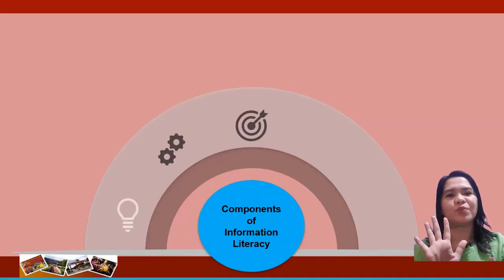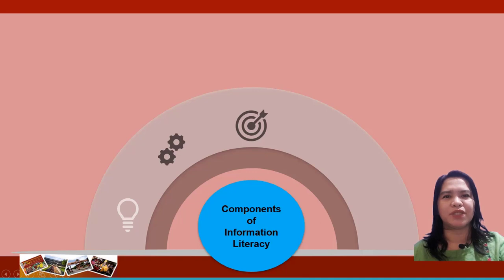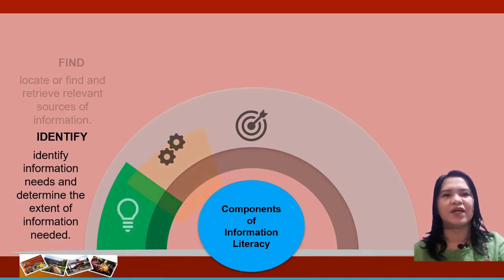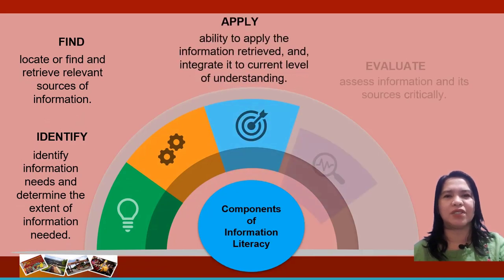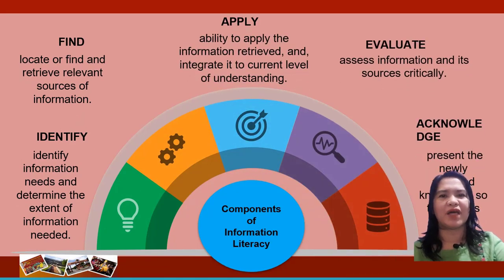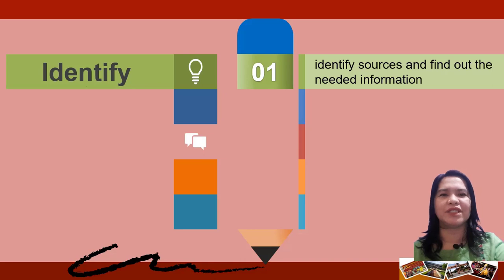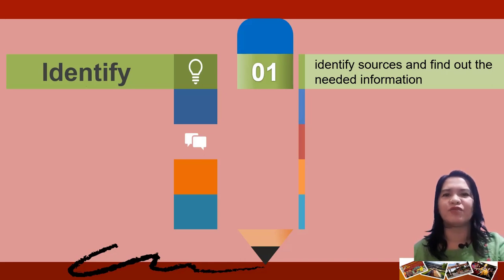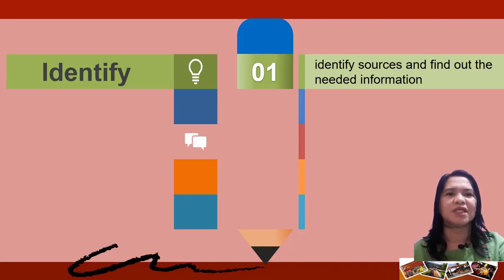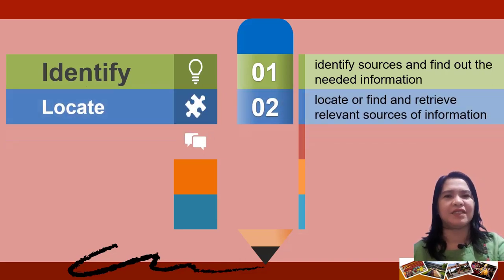Allow me to share the five components of information literacy, wherein an information literate person can readily identify, find, evaluate, apply, and acknowledge. The first component is to identify. If you consider yourself an information literate person, it is expected that you can identify information needs, find out the extent of information needed, and concisely answer questions required to perform. Second, you can locate or find and retrieve relevant sources of information.